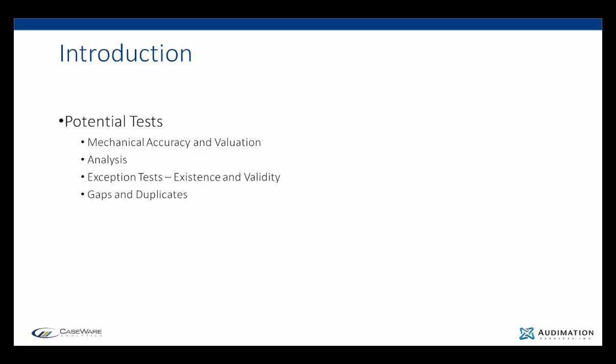Potential tests include mechanical accuracy and valuation, such as checking transaction totals to the balance on each account; analysis by stratifying the size of payments and extracting any exceptionally high payments; exception testing for existence and validity to identify payments to unauthorized suppliers by matching the payments and authorized suppliers list; and gaps and duplicates to test for missing items or gaps in the check number sequence.